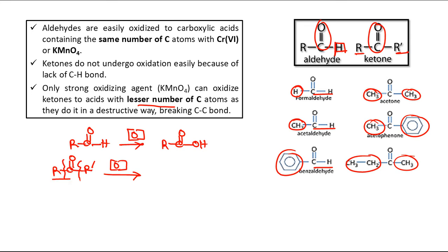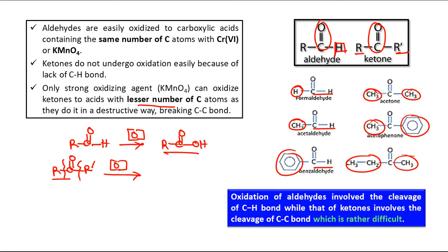If the left-hand-side CC bond is broken you get R-CO2H; if the right-hand side breaks you get R'-CO2H. So there is a destructive way by which the CC bond is broken, which is not as smooth as aldehyde oxidation where the same number of carbon atoms remains intact. In the case of ketones, fewer carbon atoms remain because oxidation happens by breaking the CC bond.